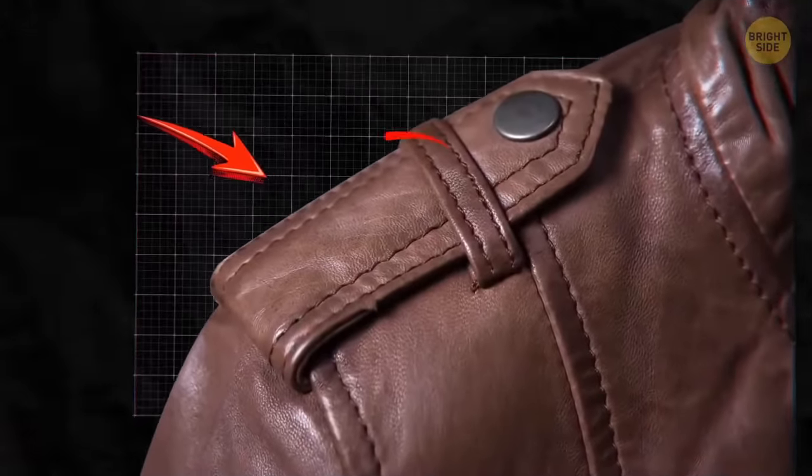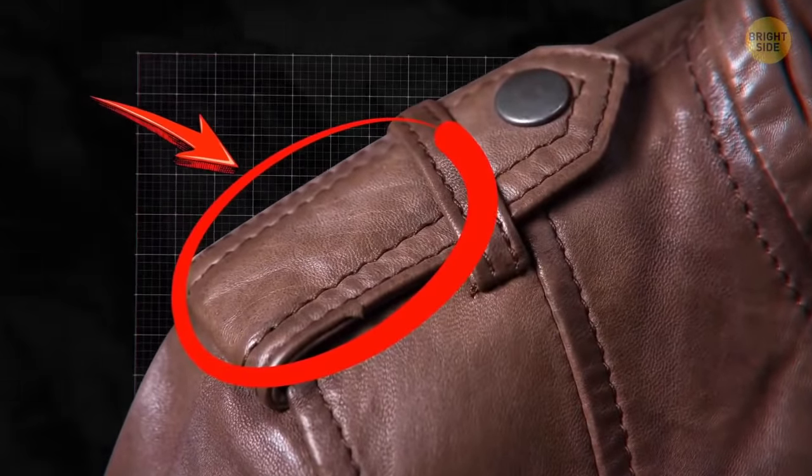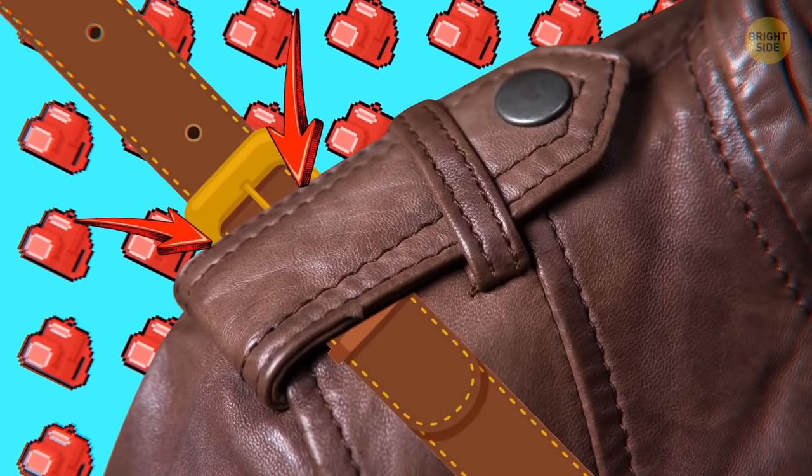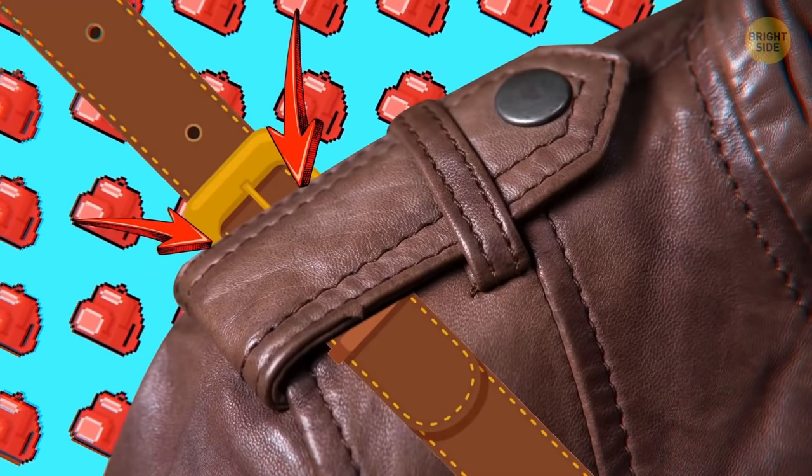Some jackets have those extra flaps with a button on the shoulder, and they actually have a use. These are perfectly designed for holding your purse, backpack, or bag in place and secure.